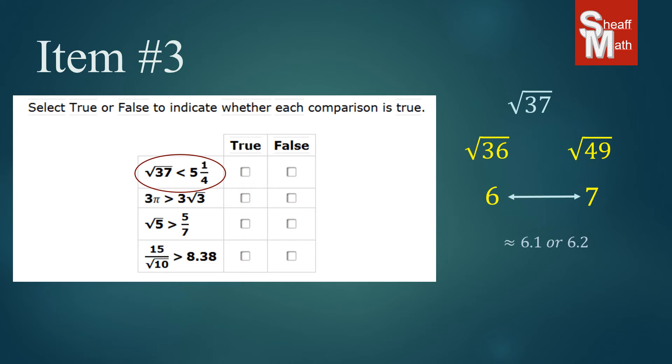Now if you put that 6.1 or 6.2 into the square root 37, you can see that it's saying that that's less than 5 and a fourth. Now that is not true. 6.1 is larger than 5 and a fourth, so that answer is false.